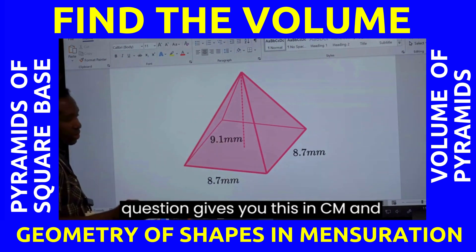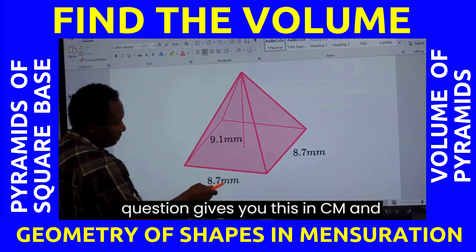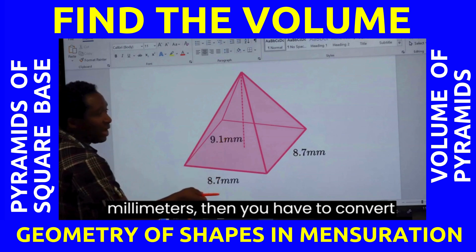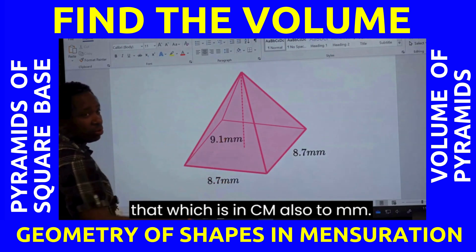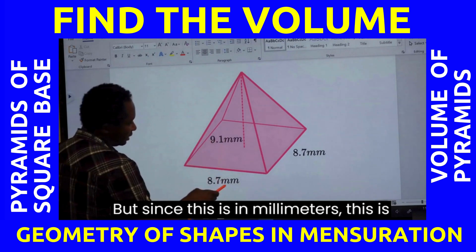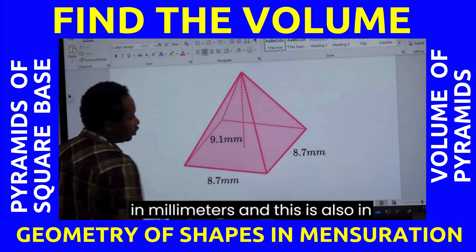If the question gives you this in cm and this in millimeters, then you have to convert that which is in cm also to millimeters. But since this is in millimeters, this is in millimeters, and this is also in millimeters...